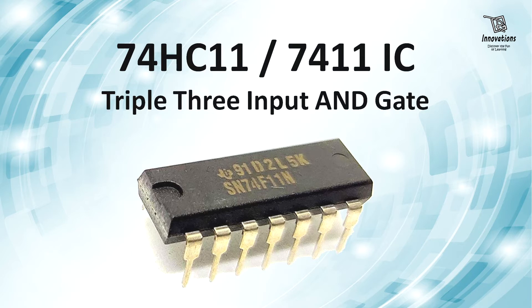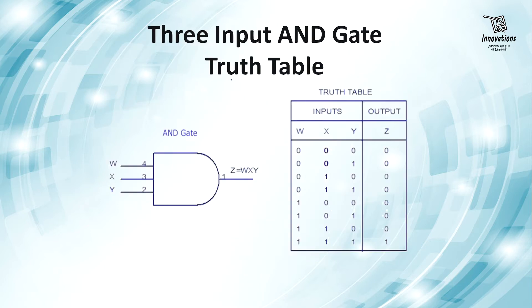At the very beginning, let us have a look at the truth table of a three input AND Gate. You can see a three input AND Gate symbol looks like this, where W, X, Y are inputs and Z is output. Z equals W, X, Y. This implies the logical multiplication between W, X and Y. If we look at the truth table where inputs are W, X and Y and the output is Z...